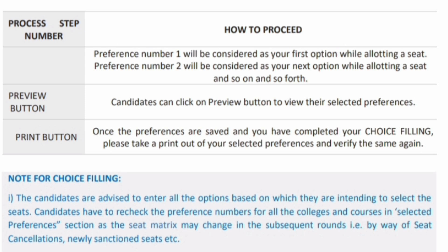Once you are done, you are good to proceed. The system will check preference number 1 first, and if a seat is available it will be allotted. If not, it will check preference number 2, then preference number 3, and so on. There is also a preview button — click it to view your selected preferences. Note that there will be no submit button, so please don't ask where the submit button is. All the preferences added by a student will be automatically taken forward.